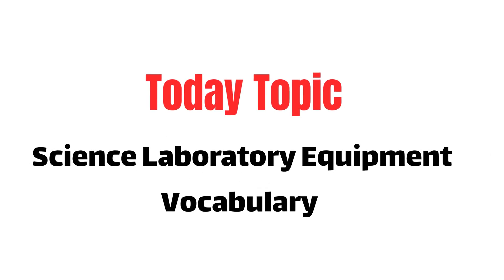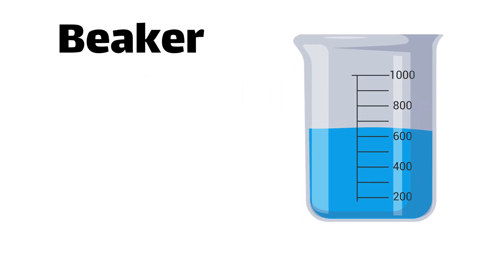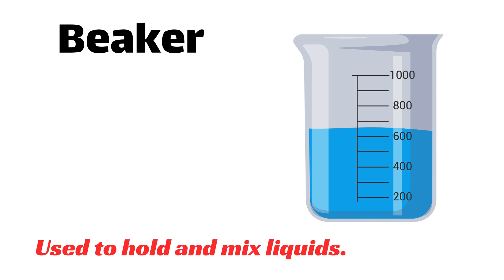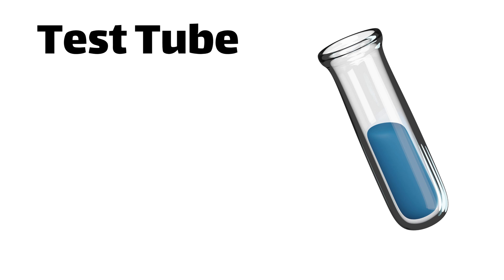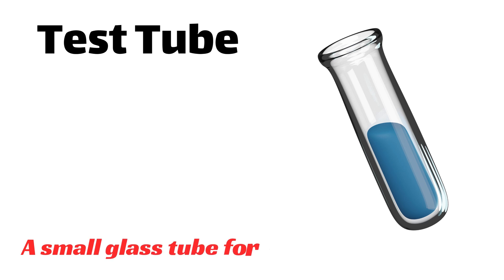Hello everyone, today this topic is science lab equipment. Beaker — used to hold and mix liquids. Test tube — a small glass tube for experiments.